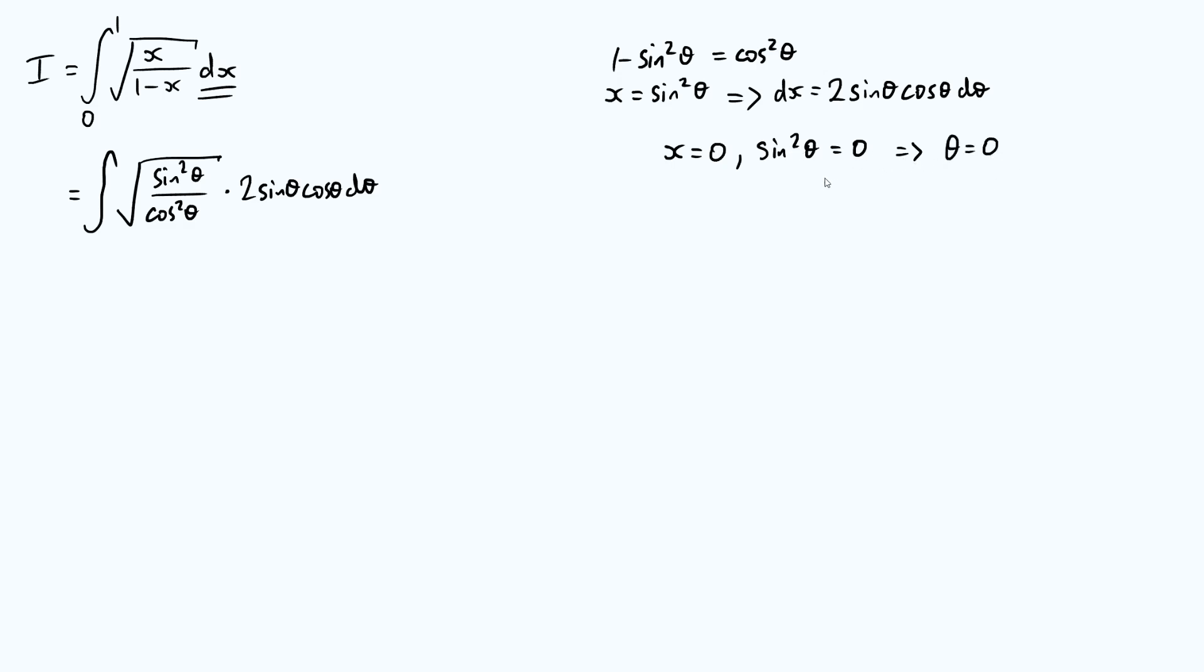but it would be sensible to choose the one at theta equals 0. Again, I haven't tried choosing a different value of theta. I assume it would turn out to be the same because sine squared theta is a periodic function, so it shouldn't really matter which point you start at.